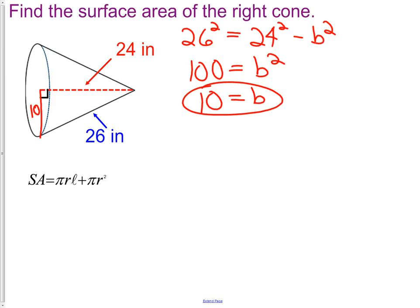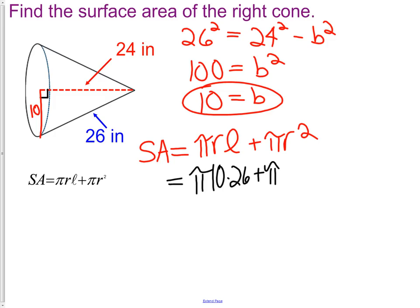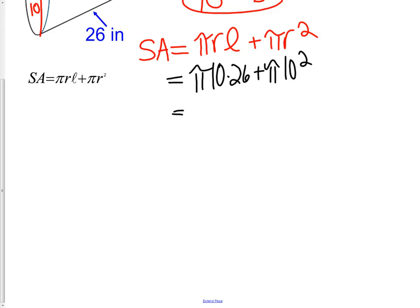We now have everything we need. The surface area of a cone is pi r l plus pi r squared. Now substitute. We know r is 10, we know l is 26, plus pi times 10 squared. So surface area, we're getting closer, is 260 pi plus 100 pi.